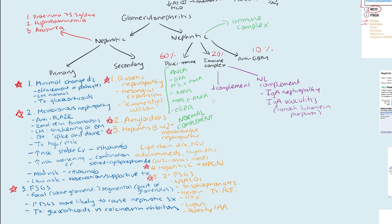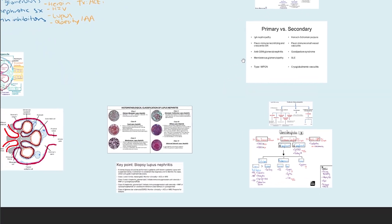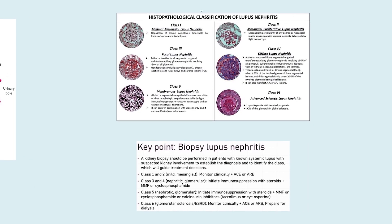Causes of low complement levels include big players like lupus nephritis, which will have both low C3 and C4; post-infectious glomerulonephritis; cryoglobulinemia; and infectious endocarditis. For lupus nephritis, once you get the biopsy there are six classes. Classes one through two are mild — just monitor and do ACE inhibitors and ARBs. For classes three through five there's progressively more disease, and treatment is immunosuppression with steroids and mycophenolate, or cyclophosphamide and calcineurin inhibitors. For class six — advanced sclerosis — treatment is really preparing for dialysis.